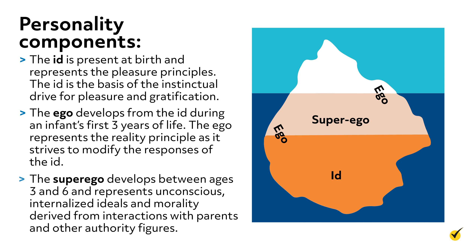And third, the superego develops between ages three and six and represents unconscious internalized ideals and morality derived from interactions with parents and other authority figures. According to Freud, the superego is composed of the ego ideal, internalized values, and the conscience, which experiences guilt.